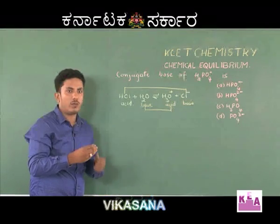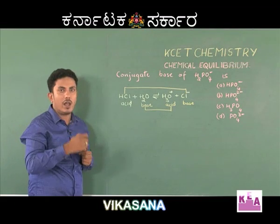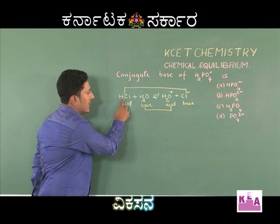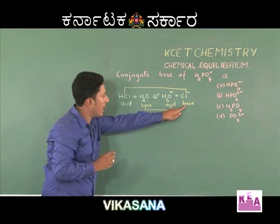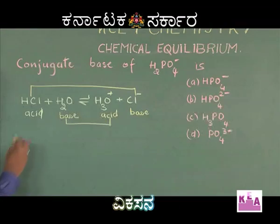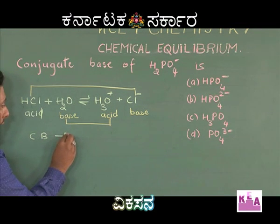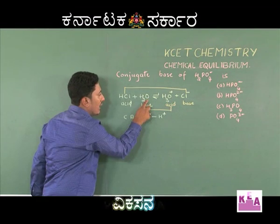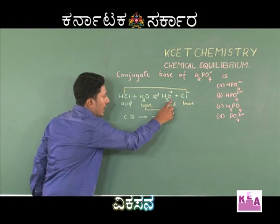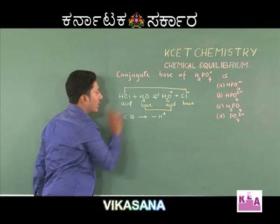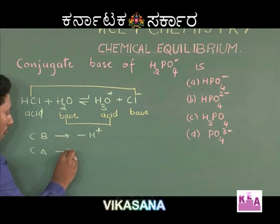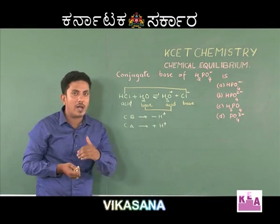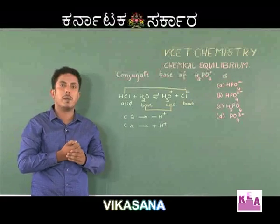Now the question is: how do you find the conjugate acid when a base is given, and how do you find the conjugate base when an acid is given? The conjugate base contains one proton less than the acid, so the conjugate base can be obtained by removing a proton from the acid. Similarly, H₃O⁺ is the conjugate acid of H₂O — the conjugate acid contains one proton more than the base. Hence the conjugate acid can be obtained by adding a proton to the Brønsted base. The simple rule: to write the conjugate acid, add a proton; to write the conjugate base, remove a proton.